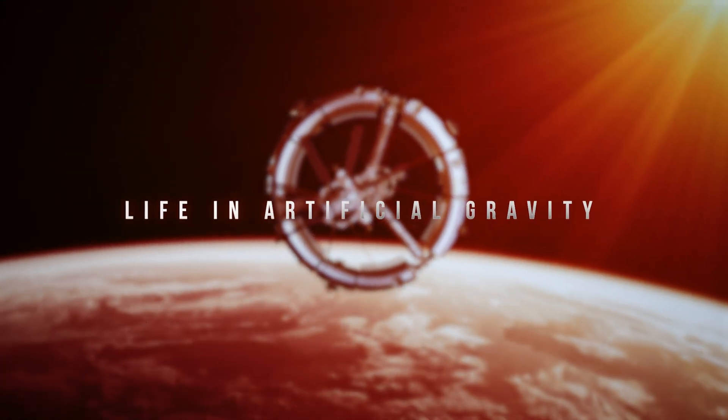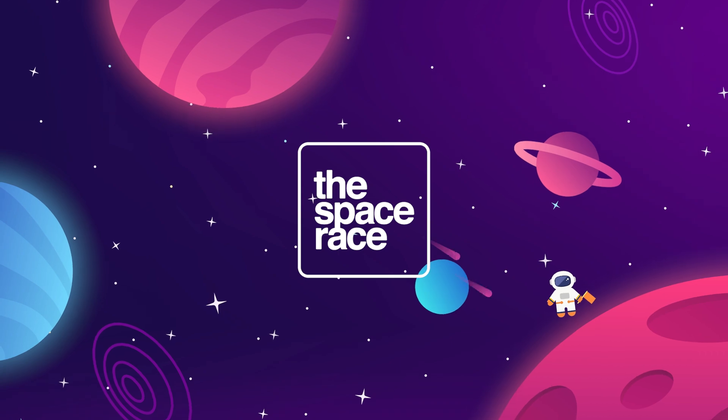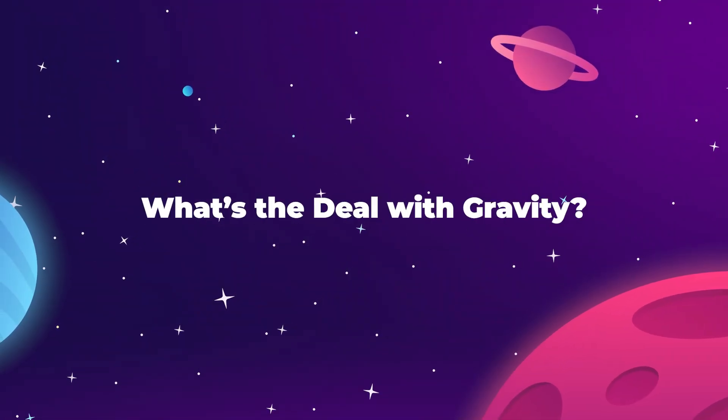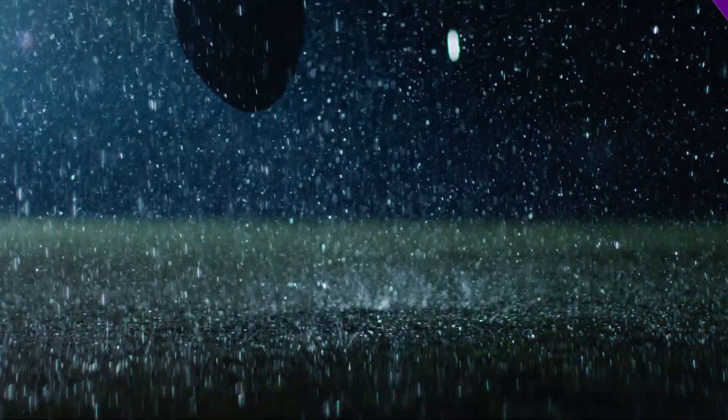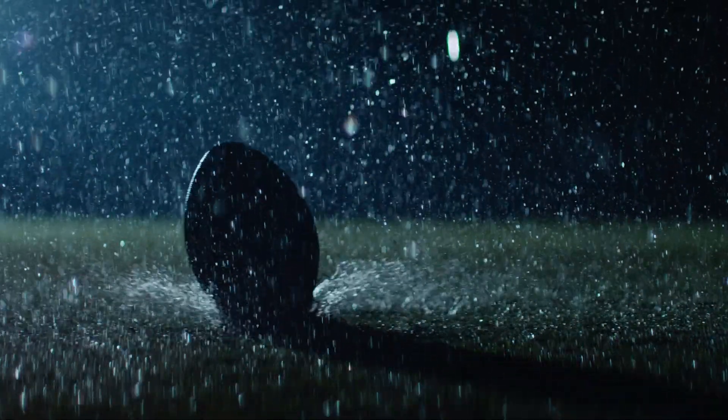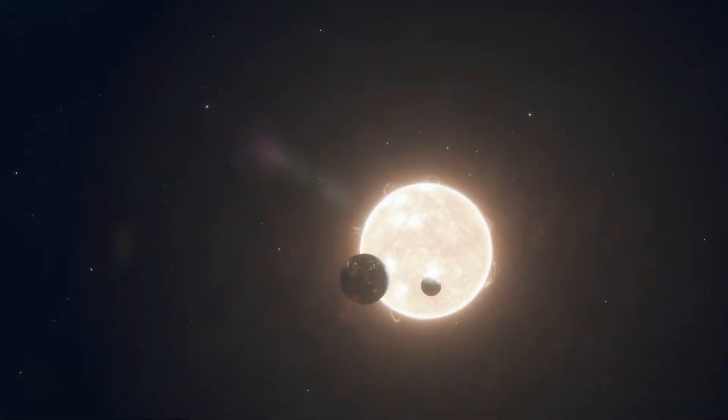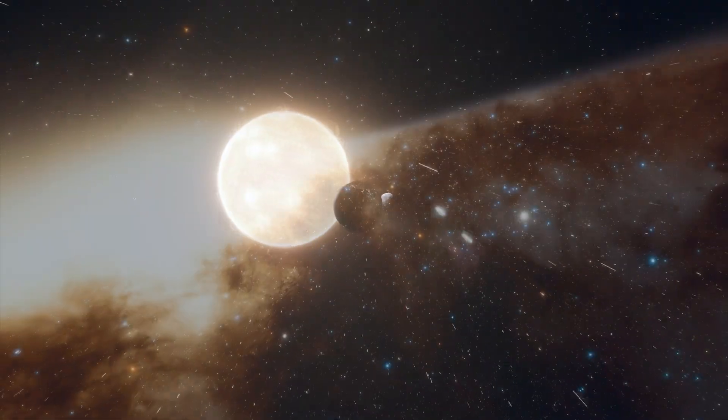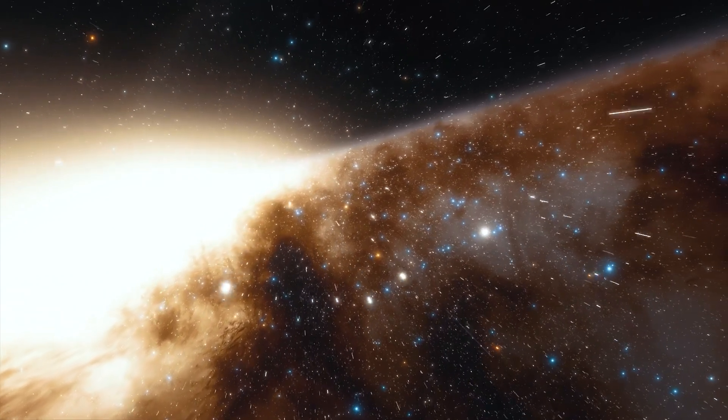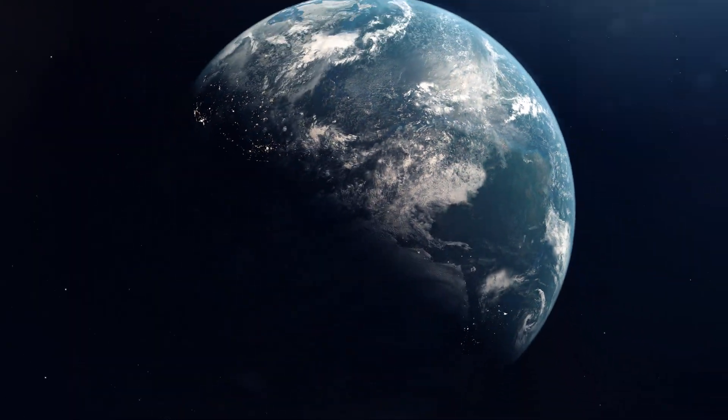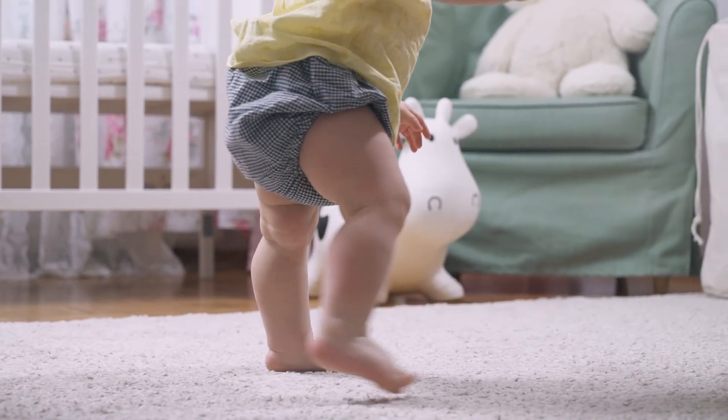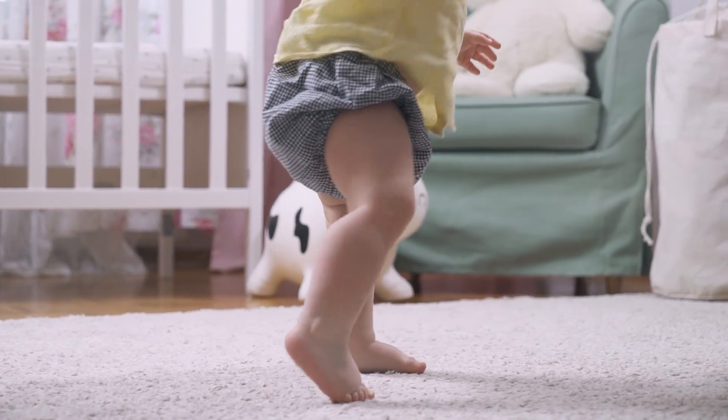Of course, whenever we say something like zero-g, what we actually mean is microgravity, because gravity is everywhere all the time. It's the force that holds the structure of the solar system and the galaxy together. Everything that has mass creates a gravitational effect, but it takes a very large concentration of mass, like a planet, to actually have a discernible effect with enough force that would make you stick to the ground.